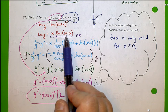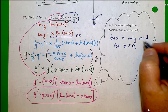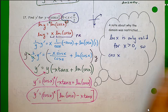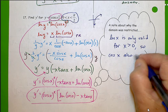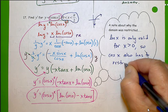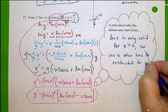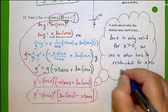Okay? So let's jot that down. So cosine x also has to be restricted to x greater than zero. And if you think about the unit circle, where is x greater than zero?